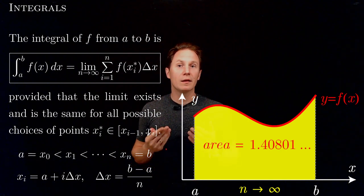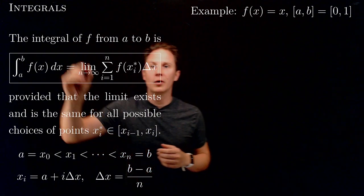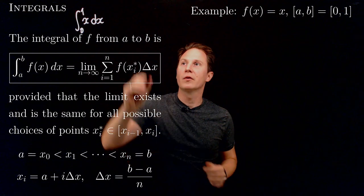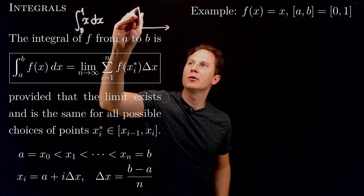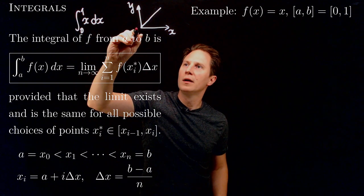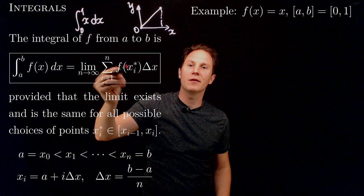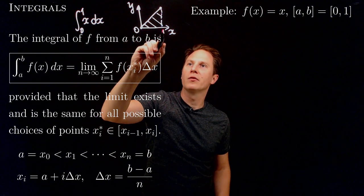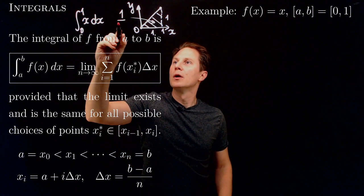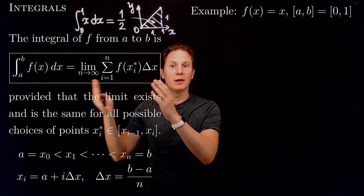Now let's see a concrete example. Let's consider the function f(x) = x over the interval between 0 and 1, so we are looking for the definite integral from 0 to 1 of x dx. The graph of that function is just a straight line with slope 1 that connects the origin to the point (1,1). Therefore the area — the region between the graph of the function and the x-axis — is just this right triangle with a base and height of unit length. The area is base times height over 2, so that should be one half. This is what we expect this definite integral to be. Now let's check it using the definition — the limit of the Riemann sums.